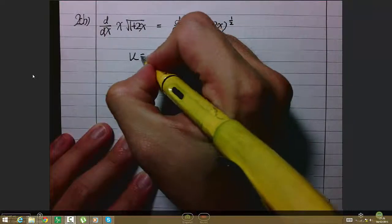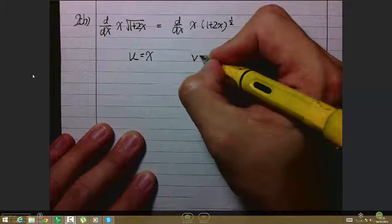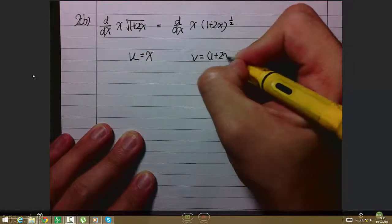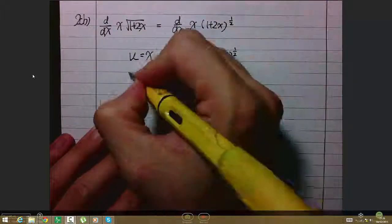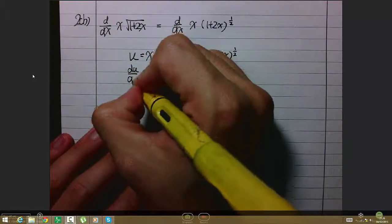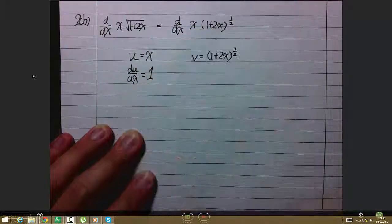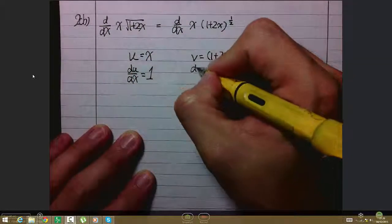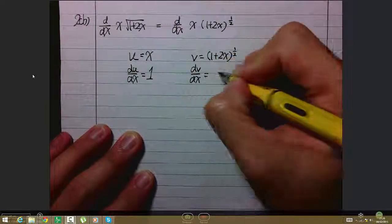In this case, u = x and v = (1+2x)^(1/2). Differentiating u with respect to x gives 1.